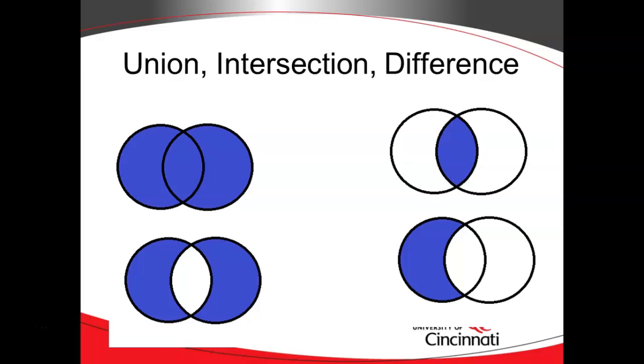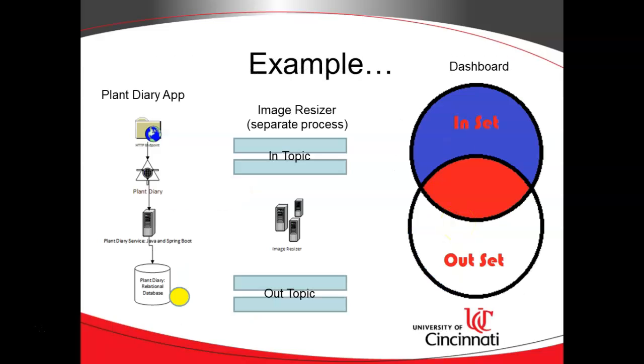This is nice because it's a very fast way to determine the state of something, and that becomes an easy way for us to create a dashboard. Let's consider this example, which is an example I'll show in code in a few moments. We essentially have a few different microservices working together here. We have a plant diary application that I've been building up, something where we can upload photos and the like.